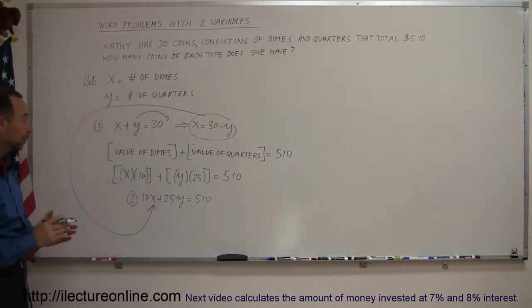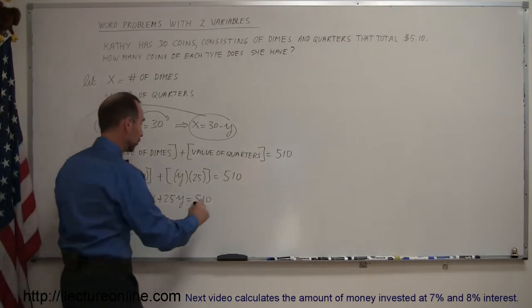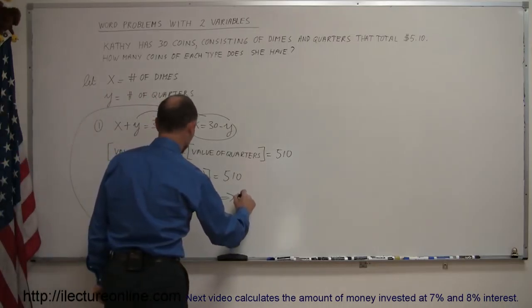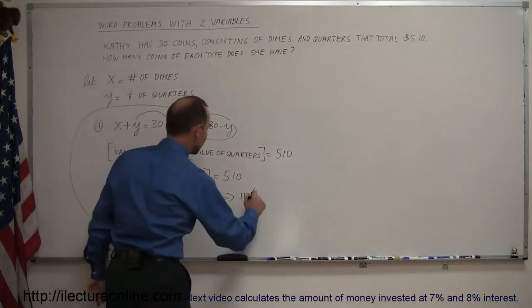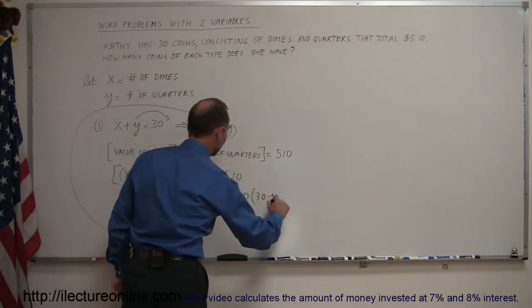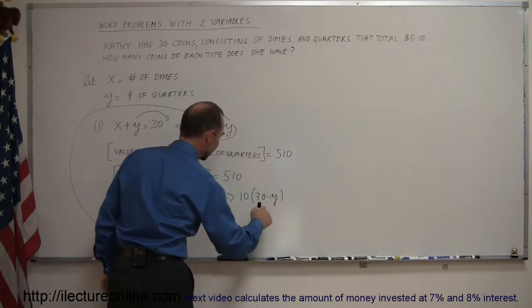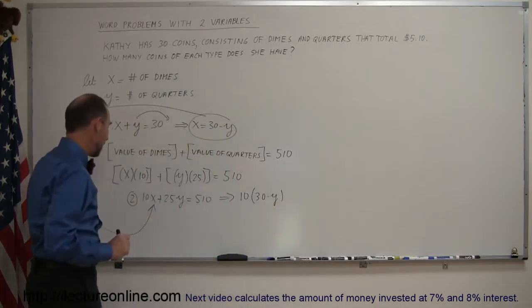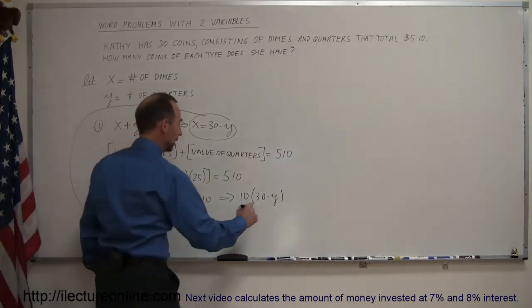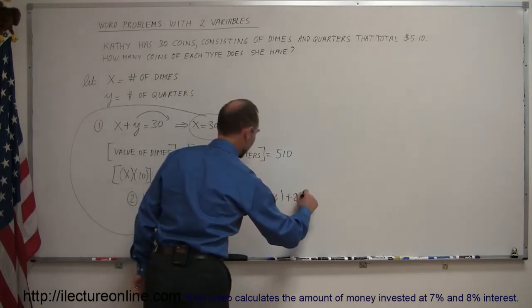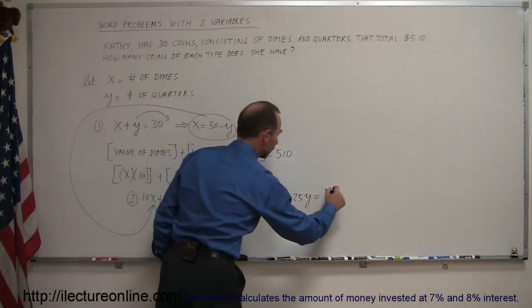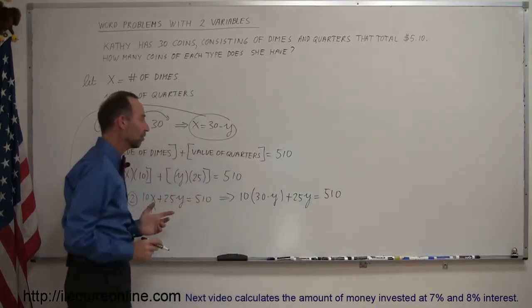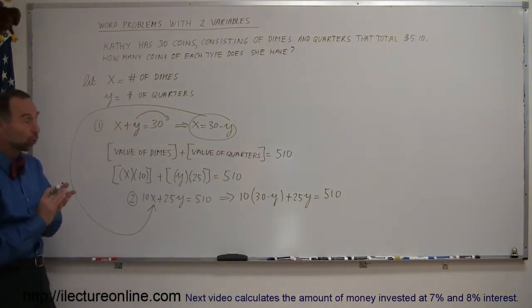That way we only end up with an equation with one variable instead of two. So this equation now becomes 10 times x, and x is equal to 30 minus y, like that, plus 25y, and that equals 510. So now I combined my two equations into a single equation with just one variable.